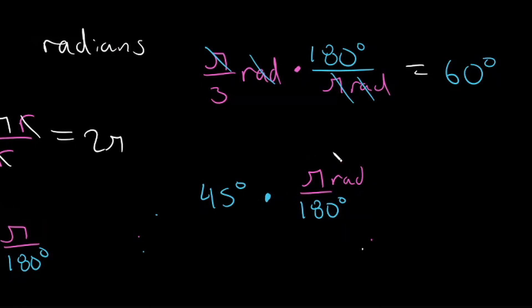So we have a pi here, and our answer is going to be in terms of pi. But what is 45 divided by 180? Well, we know 45 is 5 times 9, and we know 180 is 20 times 9, so we can get rid of our 9s and we'll have 5 over 20.